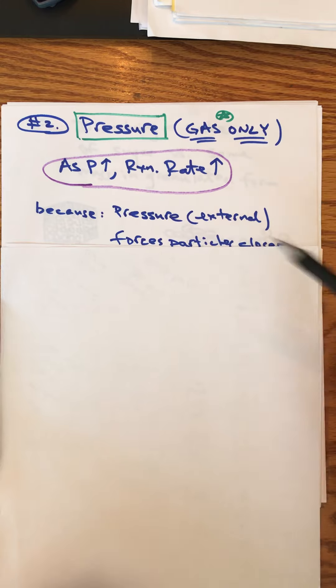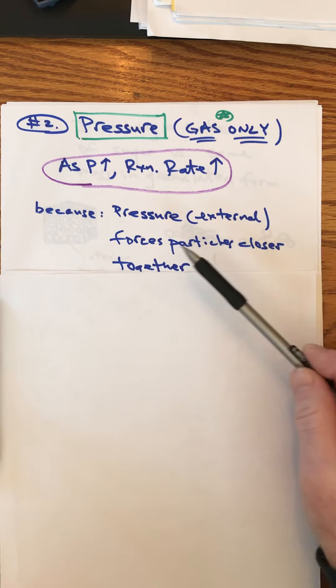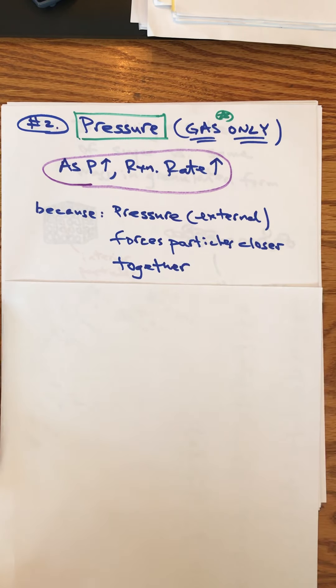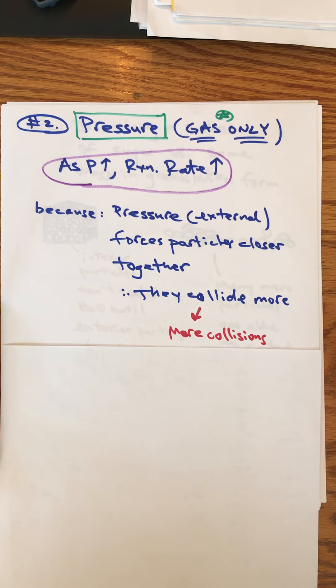Explain it: when you think of pressure, think of external pressure, think of squishing the particles together. If you force the particles closer together, what are they going to do? They're going to collide more often. You get more collisions. If you have more collisions you have a faster rate of reaction.